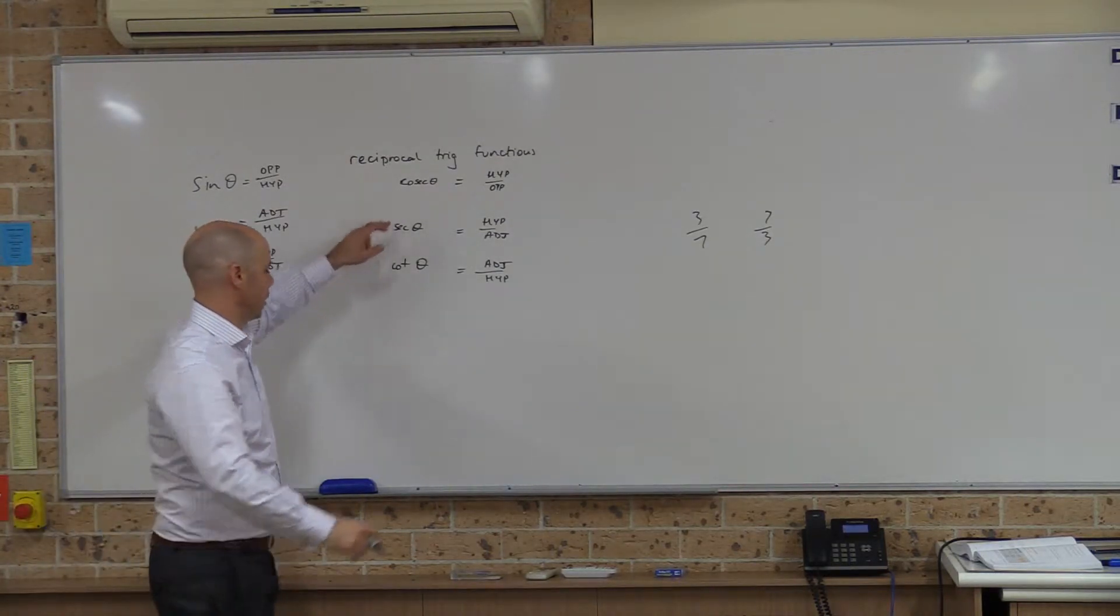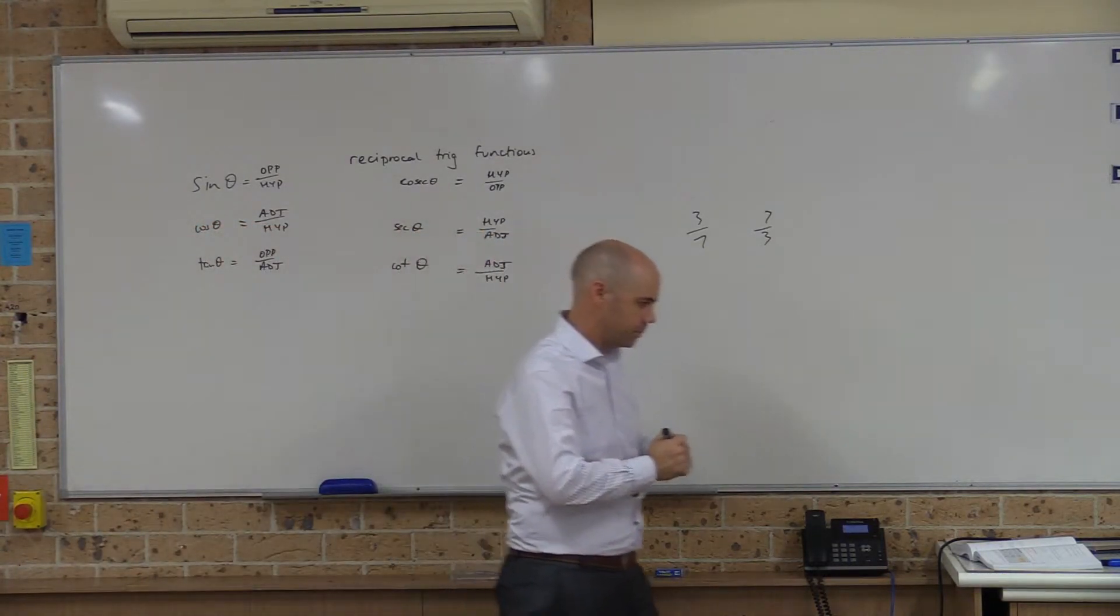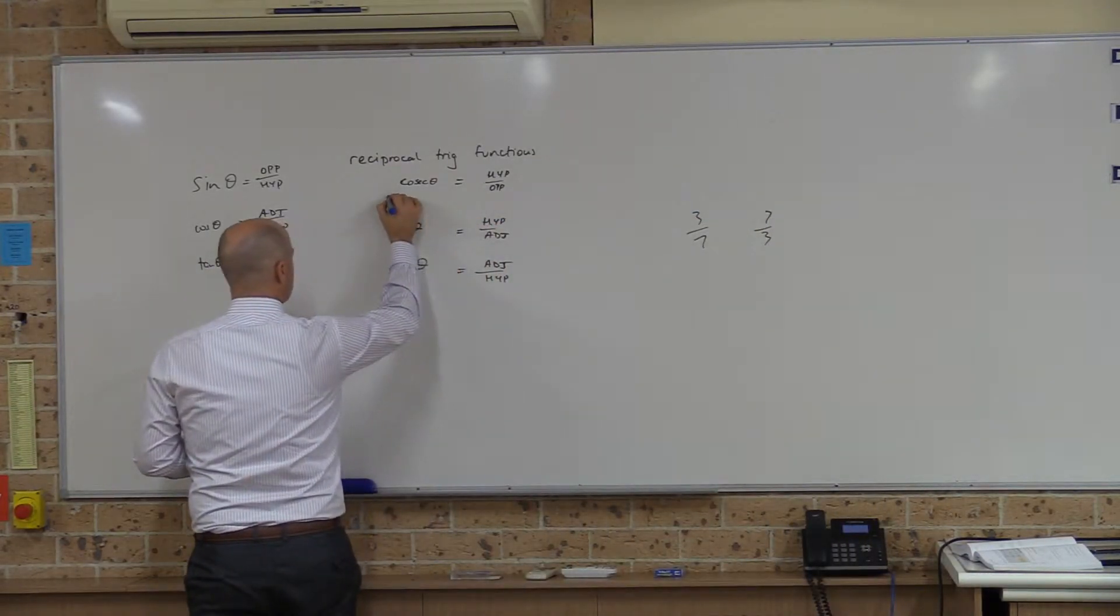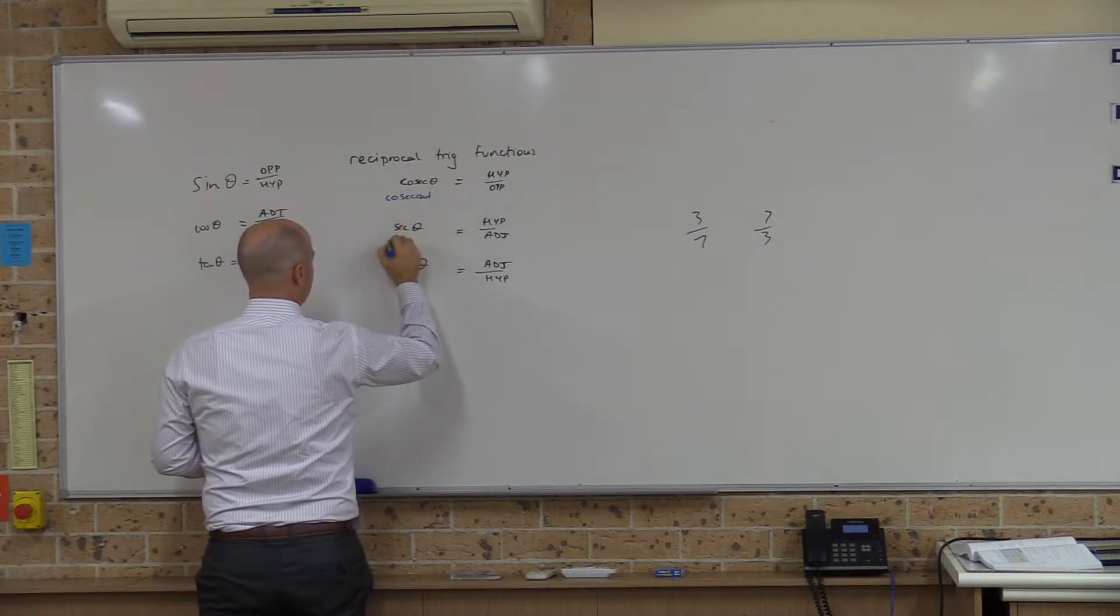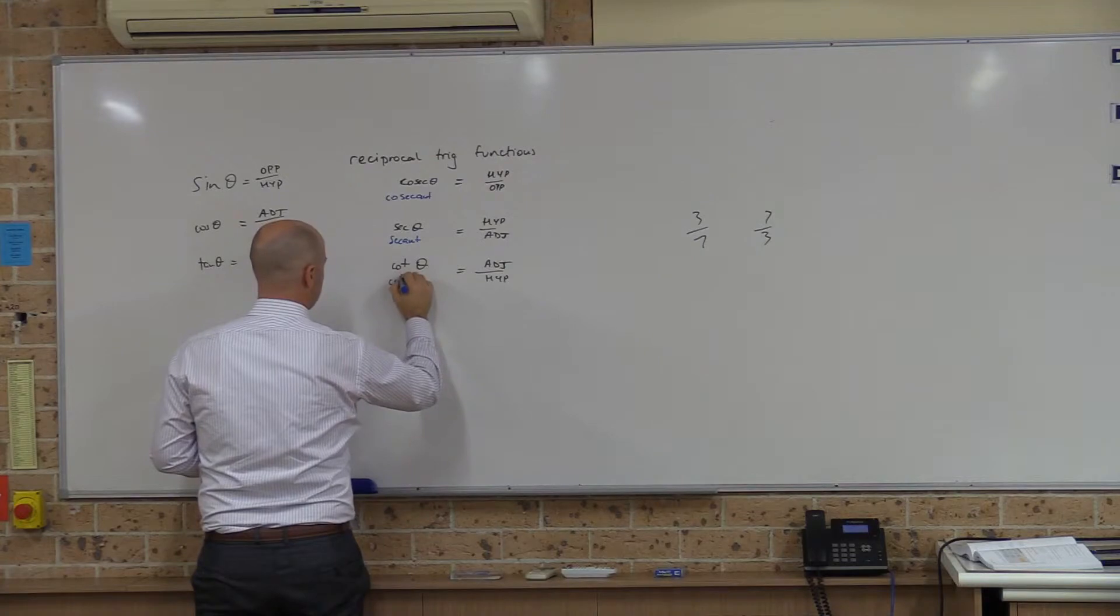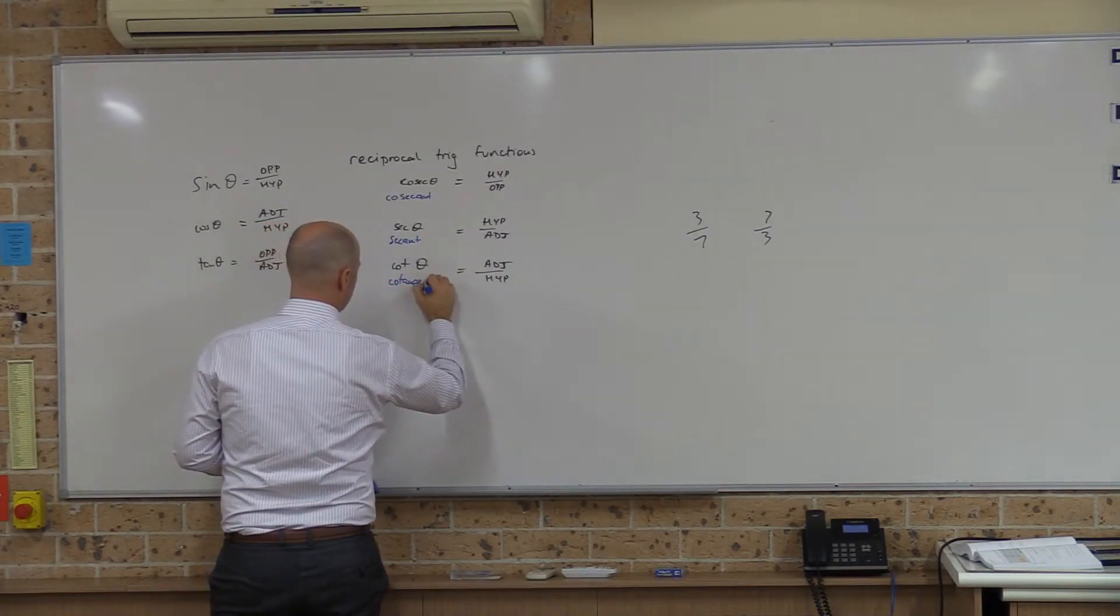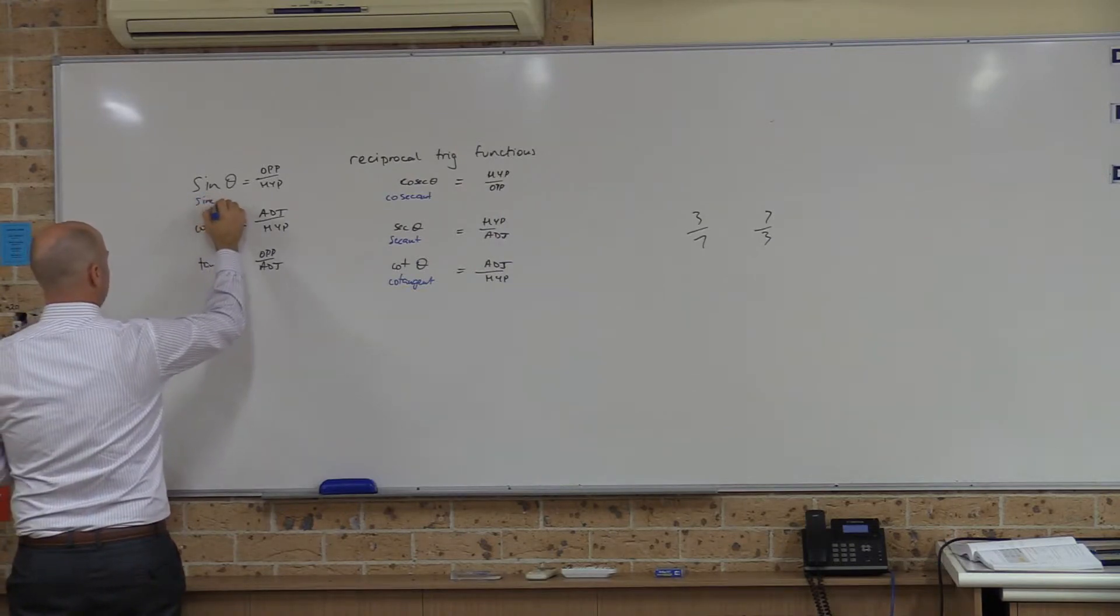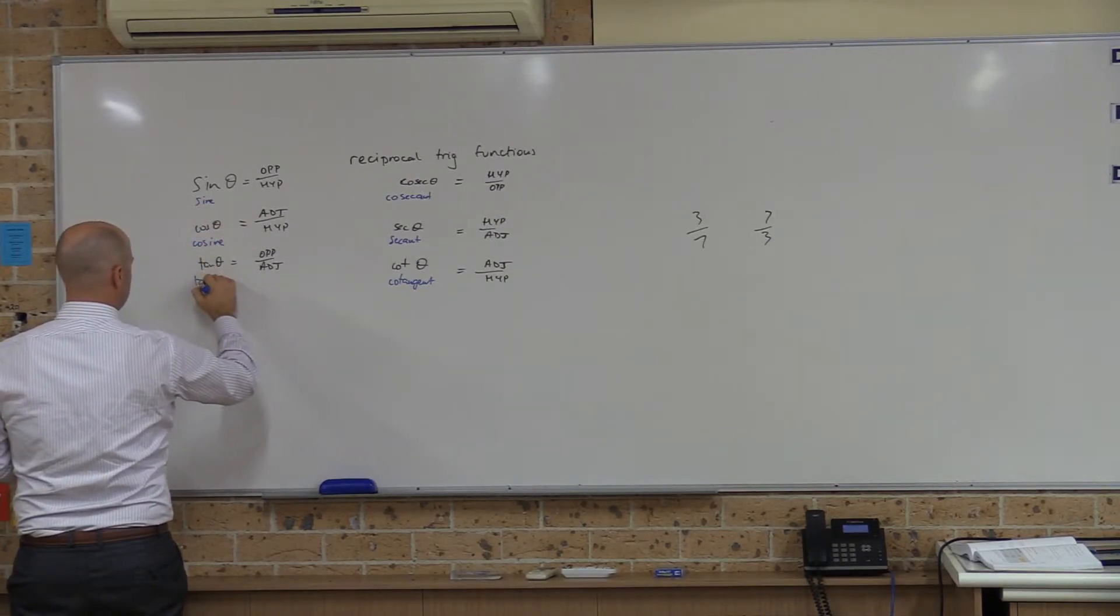And so this one is called cosecant. And this one is secant and this one is cotangent. And just to remind us, these ones are sine and cosine and tangent.